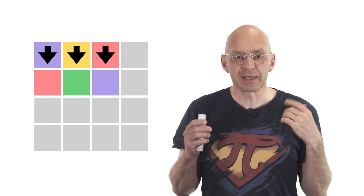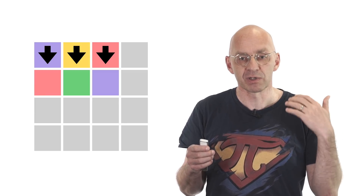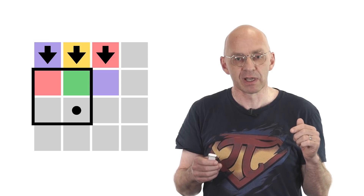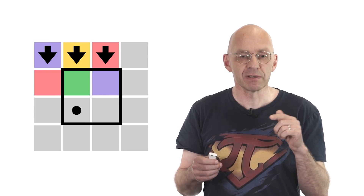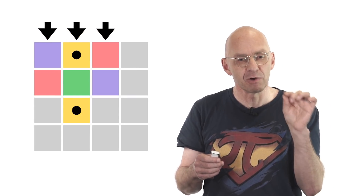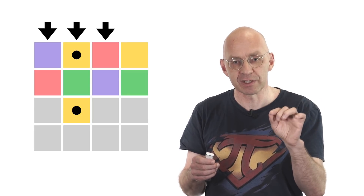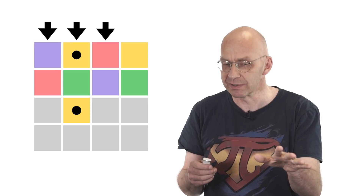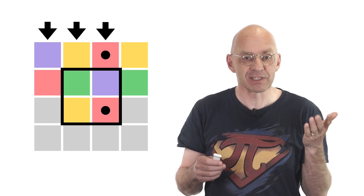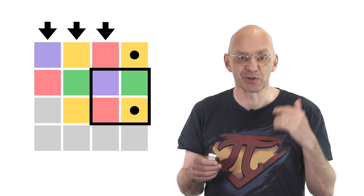Since we are again dealing with three neighboring squares of different color in the second row, we can repeat the argument and figure out what the color of the next square is. It's not red or green, and also not purple, so it's got to be yellow — the same color as the square right above in the first row. No matter how the first two rows continue, the third row has to be a copy of the first row. The remaining gray in this 2 by 2 has to be red, just like in the first row. The next gray has to be yellow, just like in the first row, and so on.